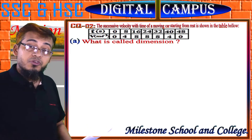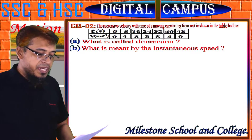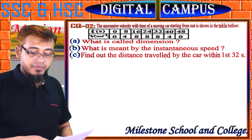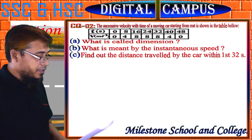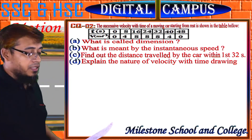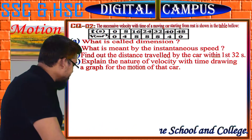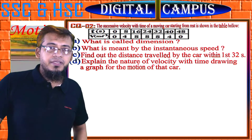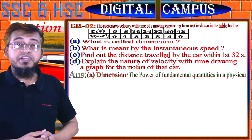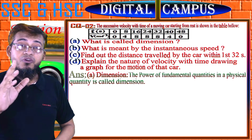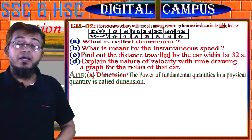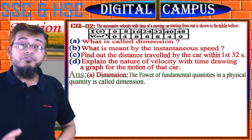Question A: What is called dimension? Question B: What is meant by instantaneous speed? Question C: Find out the distance travelled by the car within the first 32 seconds. Question D: Explain the nature of velocity with time by drawing a graph for the motion of that car. For answer A: The power of fundamental quantities in a physical quantity is called dimension. The dimension is denoted by the capital letter symbols of the fundamental quantities.